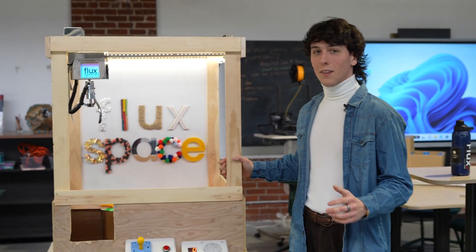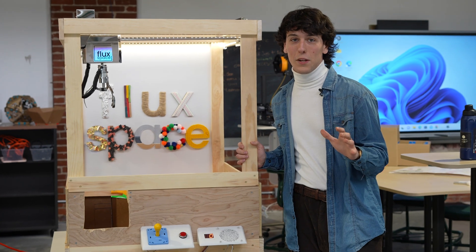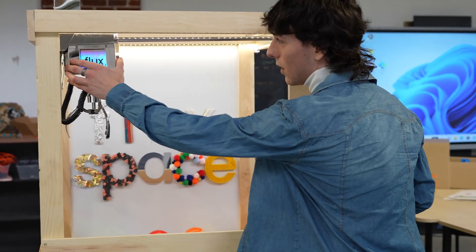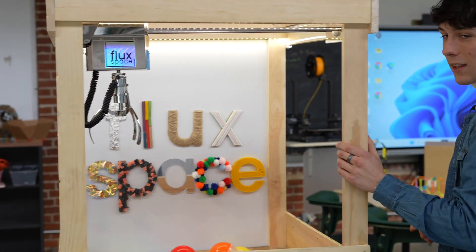So the way a claw machine works is a little bit different from a 3D printer. 3D printers have stepper motors that drive the motion in all the directions. Let's take a look at the back.